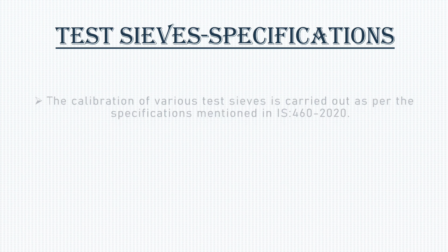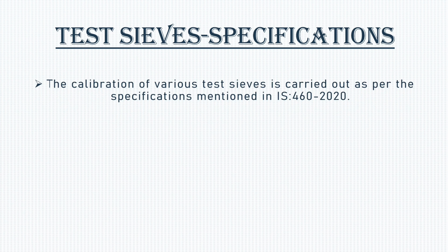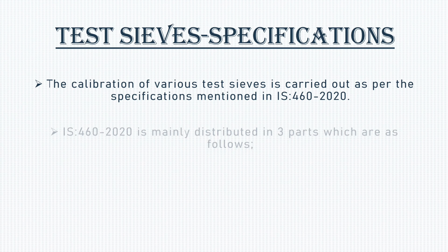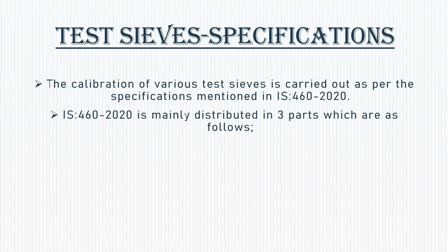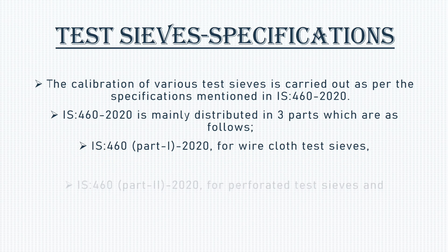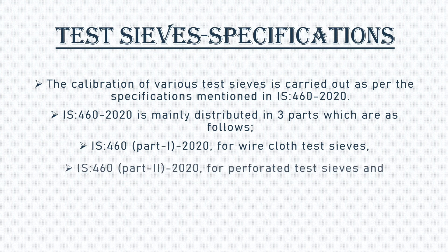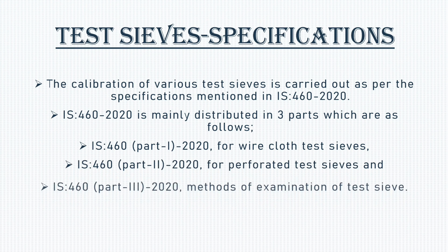Today we are providing a brief idea about specifications of test sieves. The calibration of various test sieves is carried out as per the specifications mentioned in IS-460-2020. It is mainly distributed in three parts: Part 1 for wire cloth test sieves, Part 2 for perforated test sieves, and Part 3 for methods of examination of test sieves.